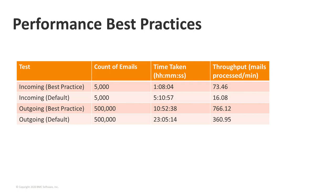That's it for our best practice tuning recommendations for the email engine. For incoming: with default settings, 5,000 emails took over five hours at 16 per minute; with best practice settings, those same 5,000 emails took just over an hour at 73 per minute. For outgoing: with default settings, 500,000 emails took 23 hours at 360 per minute; with best practice recommendations, that came down to under 11 hours at 766 per minute. That's why we recommend these settings — you should see a significant performance improvement.